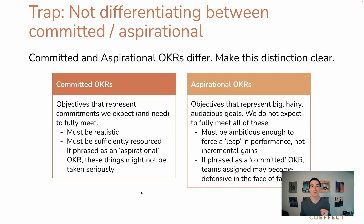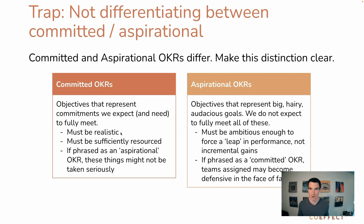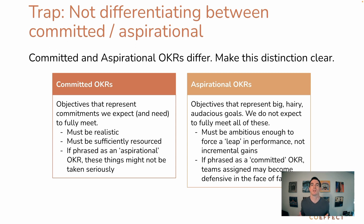Another trap is not differentiating between committed OKRs and aspirational OKRs. Committed OKRs are things you definitely need to achieve 100% as a team. Aspirational OKRs are stretch goals — even if you don't achieve them 100%, making some progress towards them is still really important. Committed OKRs must be realistic, sufficiently resourced, and involve things you kind of know how to do already. If an OKR is really a committed OKR but you phrase it as aspirational, your team might not take it seriously or give it the time and attention it deserves.